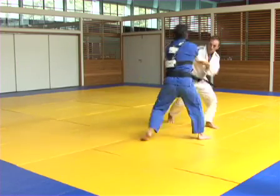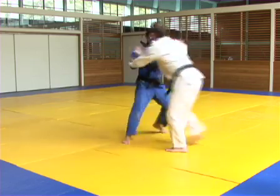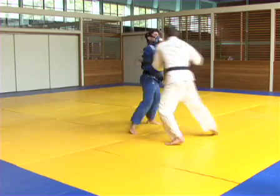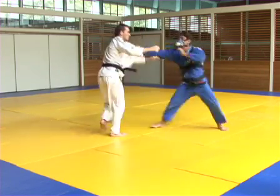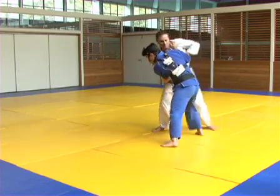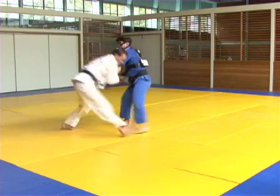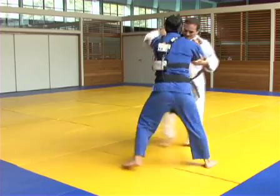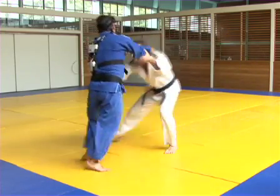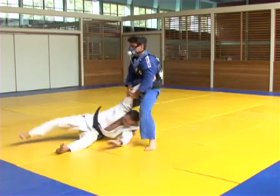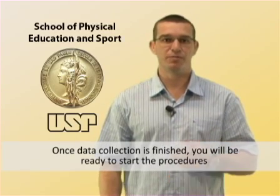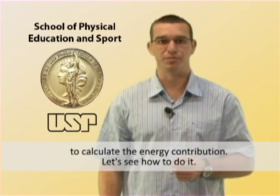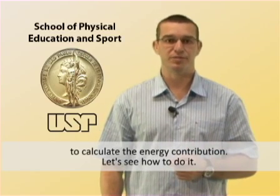For example, here we simulate a judo combat. To avoid any damage to the equipment, the opponent does not apply any effective throw. Also, the athlete being evaluated may not apply any throw that requires dorsal contact. Once data collection is finished, we will be ready to start the procedures to calculate the energy contribution.